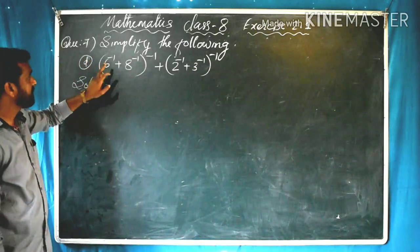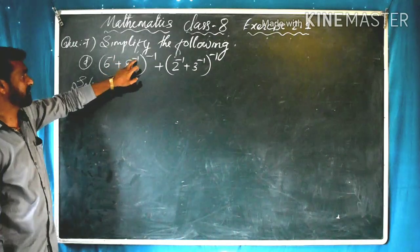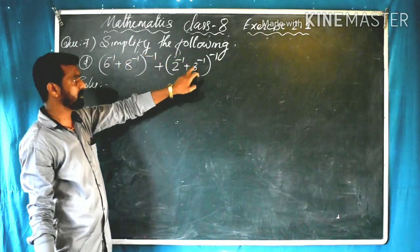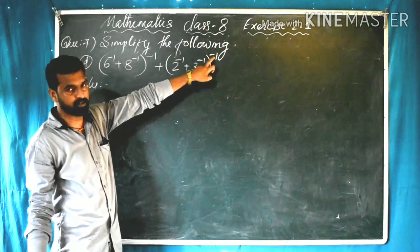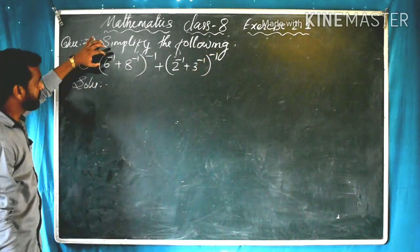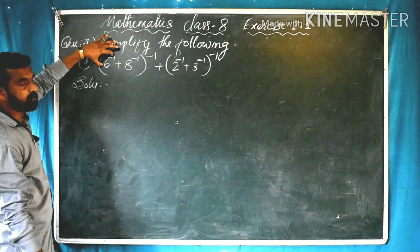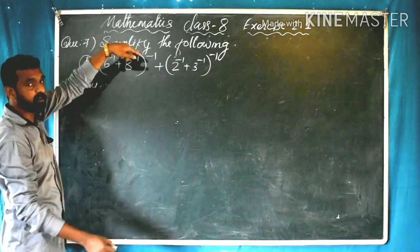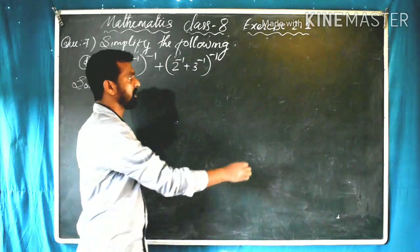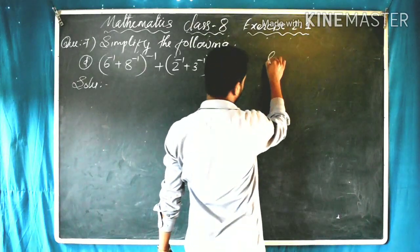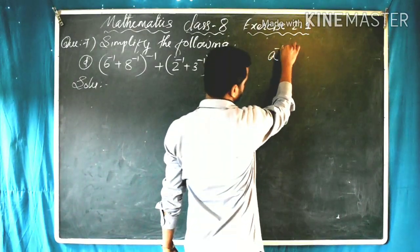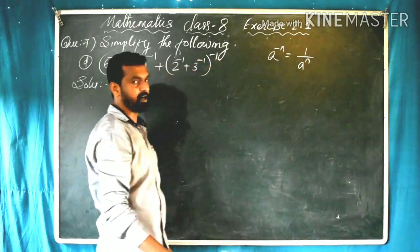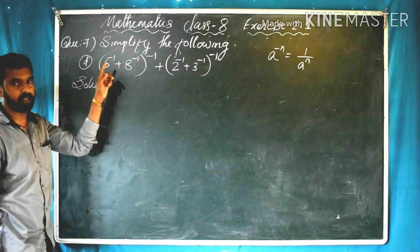Question number 7D: simplify (6 raised to minus 1 plus 8 raised to minus 1) the whole raised to minus 1, plus (2 raised to minus 1 plus 3 raised to minus 1) the whole raised to minus 1. First, we convert each exponent to a positive integer using the formula: A raised to minus N is equal to 1 by A raised to N.